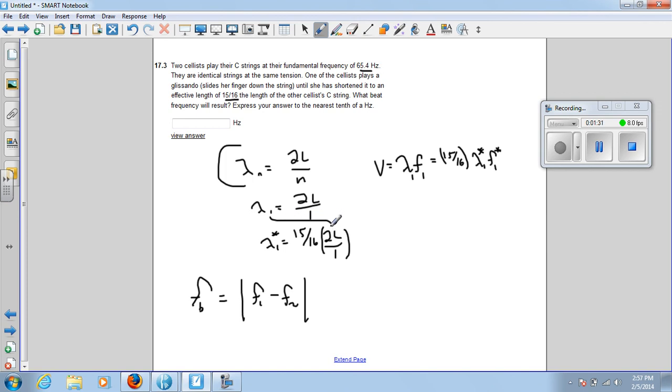Well, if we substitute lambda 1 in here, this expression is the same thing as 15 sixteenths of lambda 1. I don't want the asterisk there. So 15 sixteenths of lambda 1 is the same thing as lambda 1 asterisk.